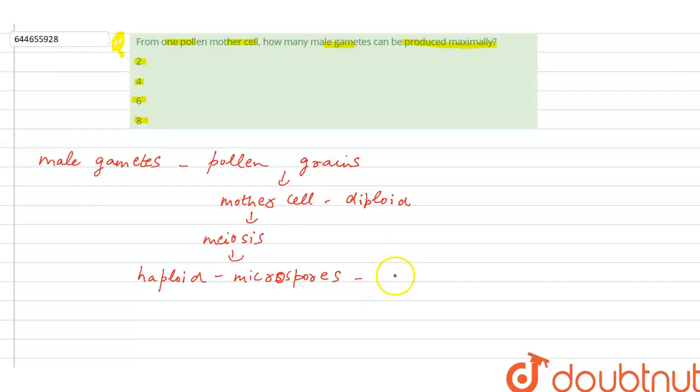So this process of formation of haploid microspores from diploid mother cell is known as microsporogenesis.